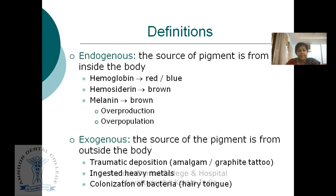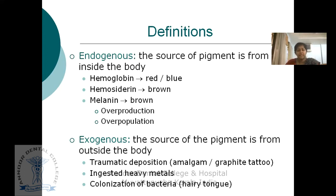What is exogenous pigmentation? When the source of the pigment is from outside the body, we call it exogenous pigmentation. For example, amalgam tattoo or graphite tattoo. These are traumatic depositions of metals, heavy ingestion of heavy metals, and colonization of bacteria.